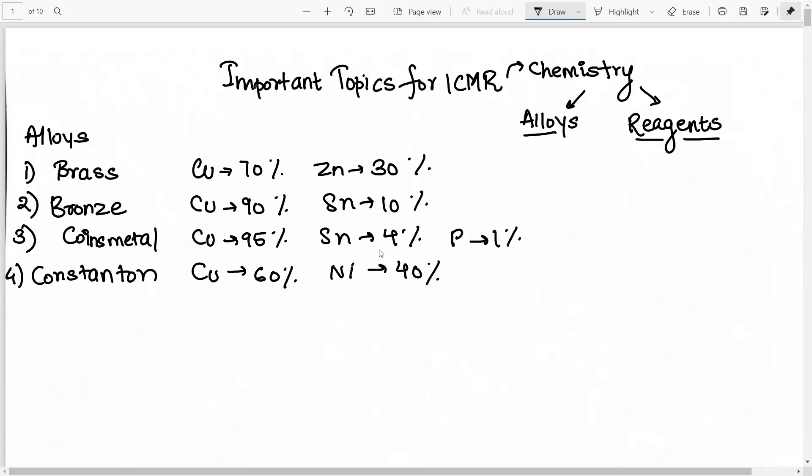Then next you have the alloy that is nichrome. This is very often asked in many examinations. So nichrome has the metals nickel, iron, chromium and manganese. And basically it is used in making electrical heaters, good quality electrical wires. Then you have alnico. Now alnico is an alloy of iron, nickel, aluminum and cobalt. So basically Al is for aluminum, Ni is for nickel, Co is for cobalt. It is basically used in the preparation of magnets.